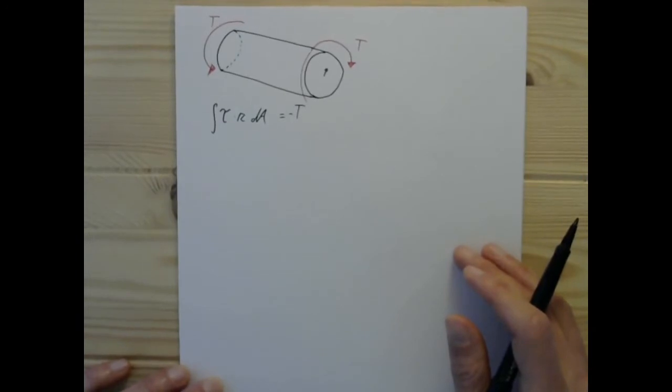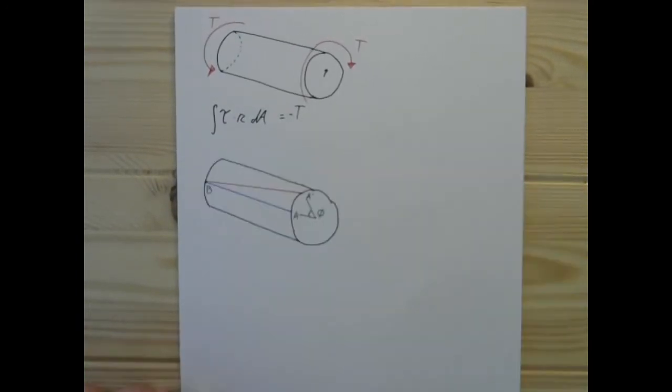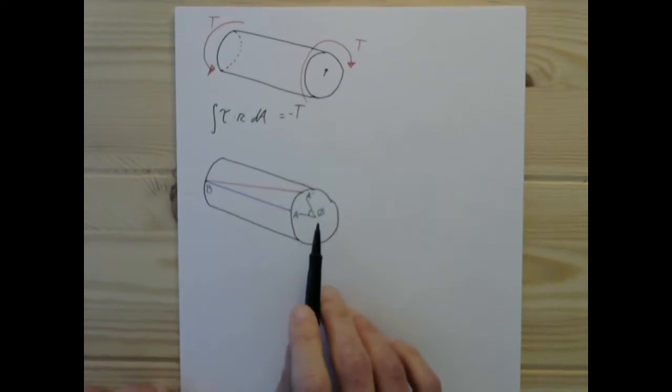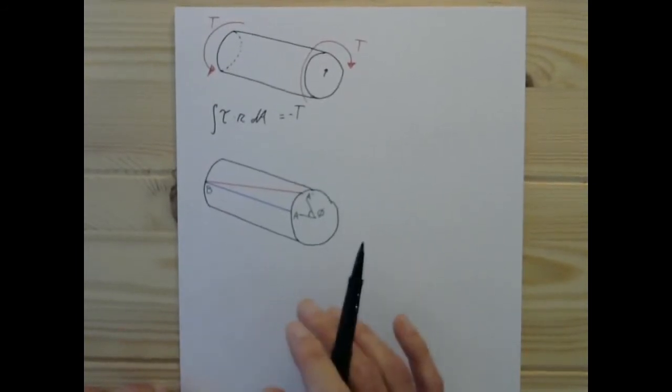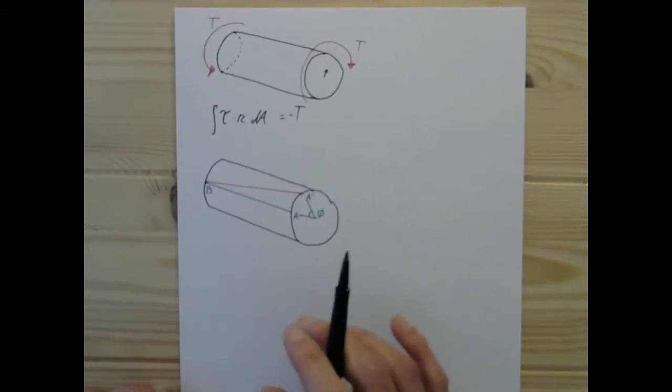So let's look at how this will deform. A bar in torsion will deform like this, assuming it is a circular bar. A circular bar is not going to be subject to any sort of warping or distortion due to torsion.